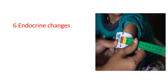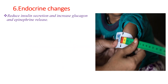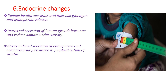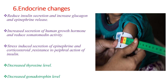The endocrine changes: in severe acute malnutrition, there is reduced insulin secretion and increased glucagon and epinephrine release. There is increased secretion of human growth hormone and reduced somatomedin activity due to recirculation of amino acids. Stress-induced secretion of epinephrine and corticosteroids occurs. There is resistance to peripheral action of insulin, decreased thyroxine level, and also decreased gonadotropin level.